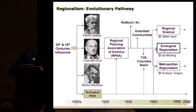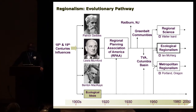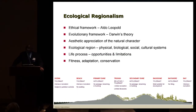At the early turn of the century, regionalists — Patrick Geddes, Mumford, Benton MacKaye — called for decentralizing cities to accommodate urban growth. Their ideas were adopted by members of the Regional Planning Association of America. Over time, regionalism developed in divergent ways: from the original civic ideas of Walter Christaller, to the ecological regionalism of Ian McHarg, to metropolitan regionalism as seen today in Portland, Oregon. Ecological regionalism views the region as an interactive mosaic of biological, physical, social, and cultural systems that provide opportunities and constraints.